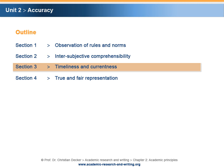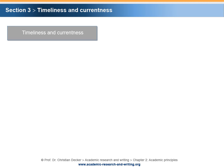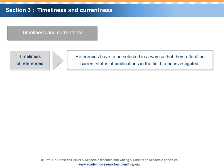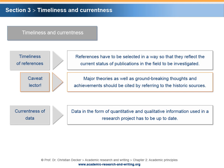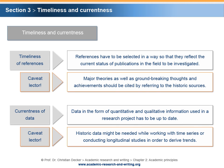Section 3: Timeliness and Currentness. The principle of accuracy implies paying attention to timeliness and currentness. Timeliness of references means that references have to be selected in a way so that they reflect the current status of publications in the field to be investigated. Caveat lector: major theories as well as groundbreaking thoughts and achievements should be cited by referring to the historic sources. Currentness of data refers to the requirement that data in the form of quantitative and qualitative information used in a research project has to be up to date. Caveat lector: historic data might be needed while working with time series or conducting longitudinal studies in order to derive trends.